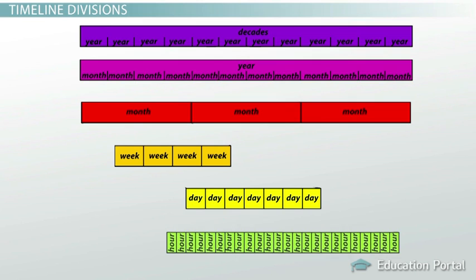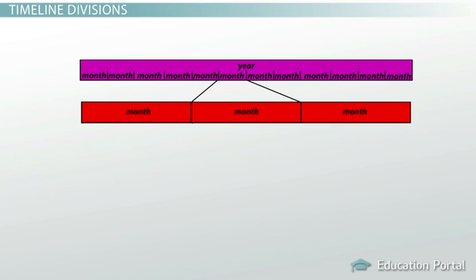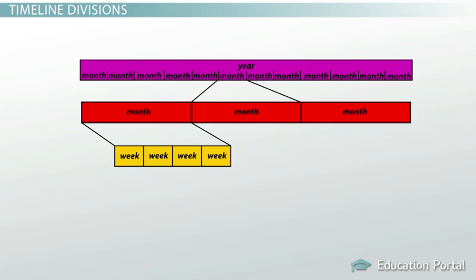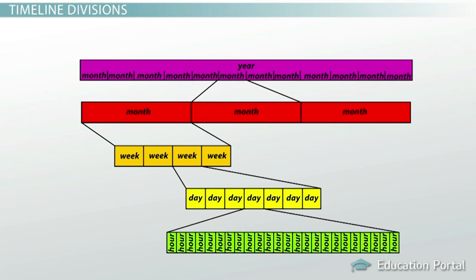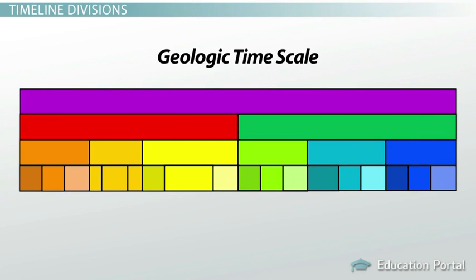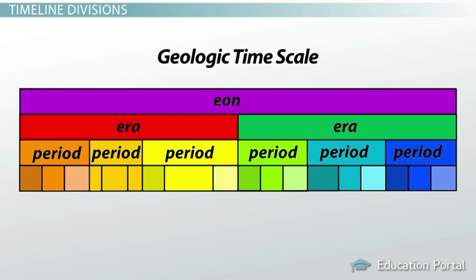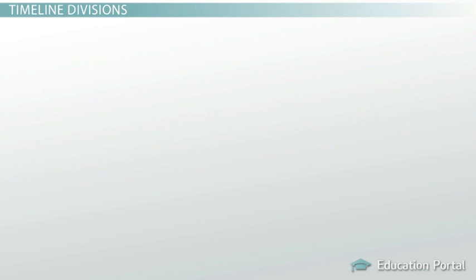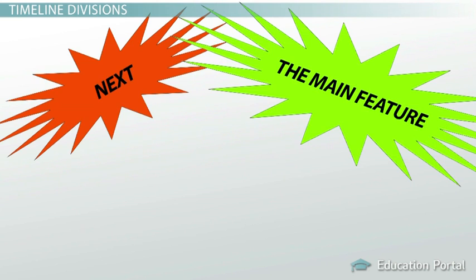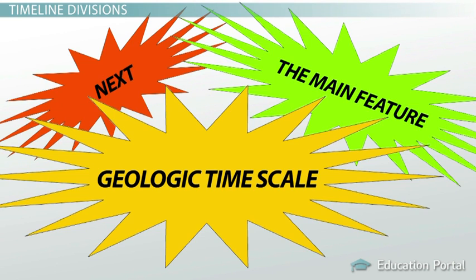That's why we've broken up our time. Years are made up of months, months are made up of weeks, weeks are made up of days, and so on. Geologists use the very same strategy to talk about the history of the Earth — they break up geologic time into larger and smaller chunks so that major events are easier to talk about. Now let's go ahead and check out the major divisions of the geologic timescale.